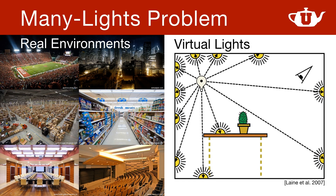Many real environments contain lots of lights. The history of the many lights problem is often tied to instant radiosity — which is not instant or radiosity — but the concept of approximating global illumination using virtual lights, which are generated from the actual scene lights. Regardless of how the lights are generated, whether virtual, hand-placed, or procedural, we may have to deal with the complexity of many lights during rendering.